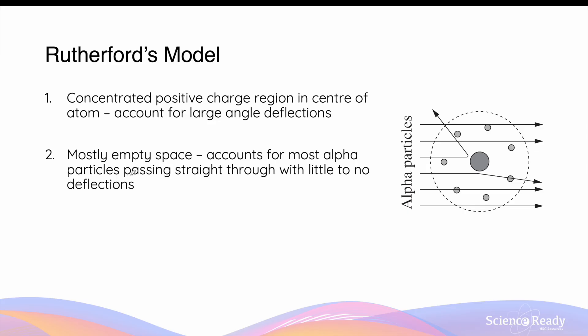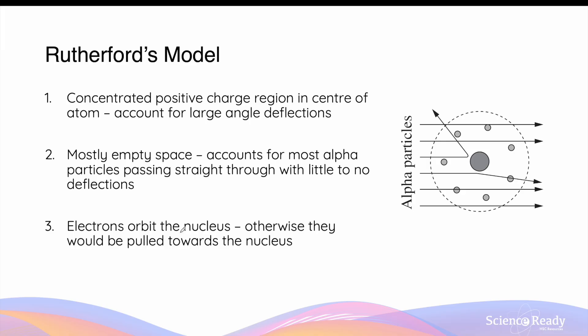Rutherford's model also proposed that most of the atom actually consisted of empty space. This is because in Geiger and Marsden's gold foil experiment, most of the alpha particles still passed straight through the atom with little to no deflection, and Rutherford justified this by saying most of the atom was actually empty space. Lastly, Rutherford further proposed that the electrons in the atom actually orbited around the central positive nucleus — otherwise stationary electrons would have been pulled towards the nucleus due to the electrostatic attraction between the positive nucleus and the negatively charged electrons.